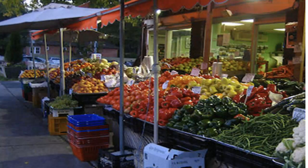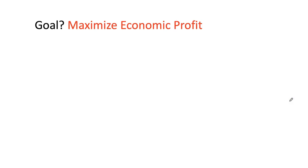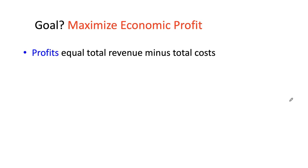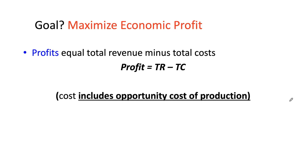Next, we want to look at what happens within a firm operating under a perfectly competitive market structure. The goal for a producer is profit maximization. Profit is simply total revenue minus total costs. Please remember that costs here are the opportunity cost of production — we are taking into account all explicit and implicit costs. Our goal is to maximize this profit while operating under a perfectly competitive market structure.